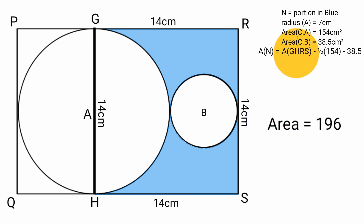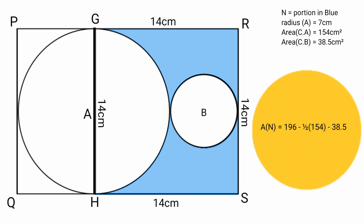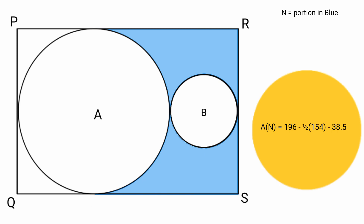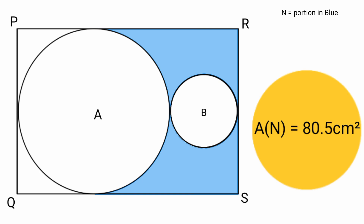Substituting: area of N equals 196 minus (1/2)(154) minus 38.5. Half of 154 is 77, so area of N equals 196 minus 77 minus 38.5, which equals 80.5 centimeters squared. Therefore the area of the blue shaded portion is 80.5 centimeters squared.